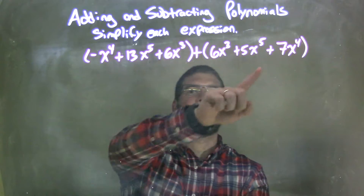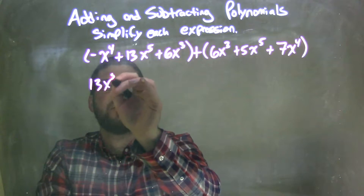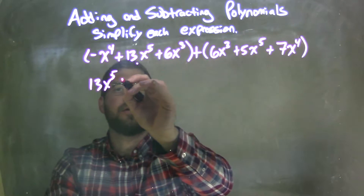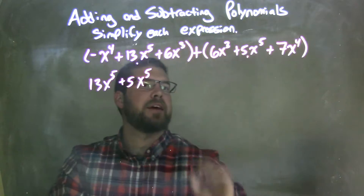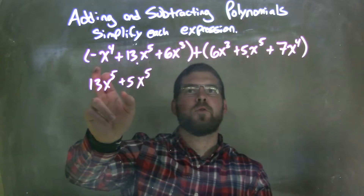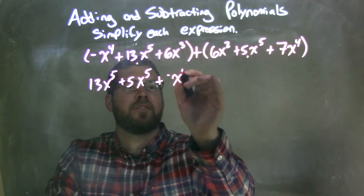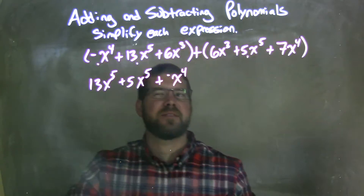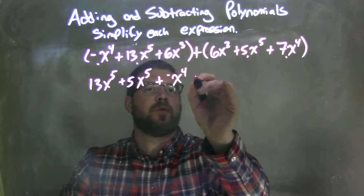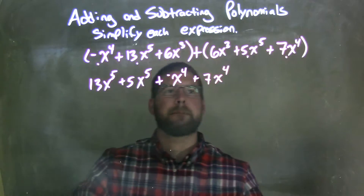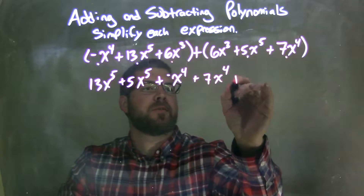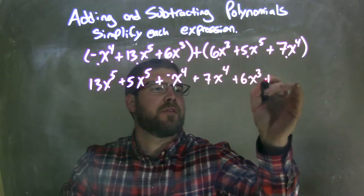So highest degree is first. The highest degree I see is the fifth power, so I'm going to put 13x to the fifth first and mark that I got it. Then I have another fifth power: plus 5x to the fifth. Nothing else to the fifth. Now the fourth power is next, so we have plus negative x to the fourth right there, then plus 7x to the fourth. Now my next highest power is the third power: 6x to the third and another 6x to the third.